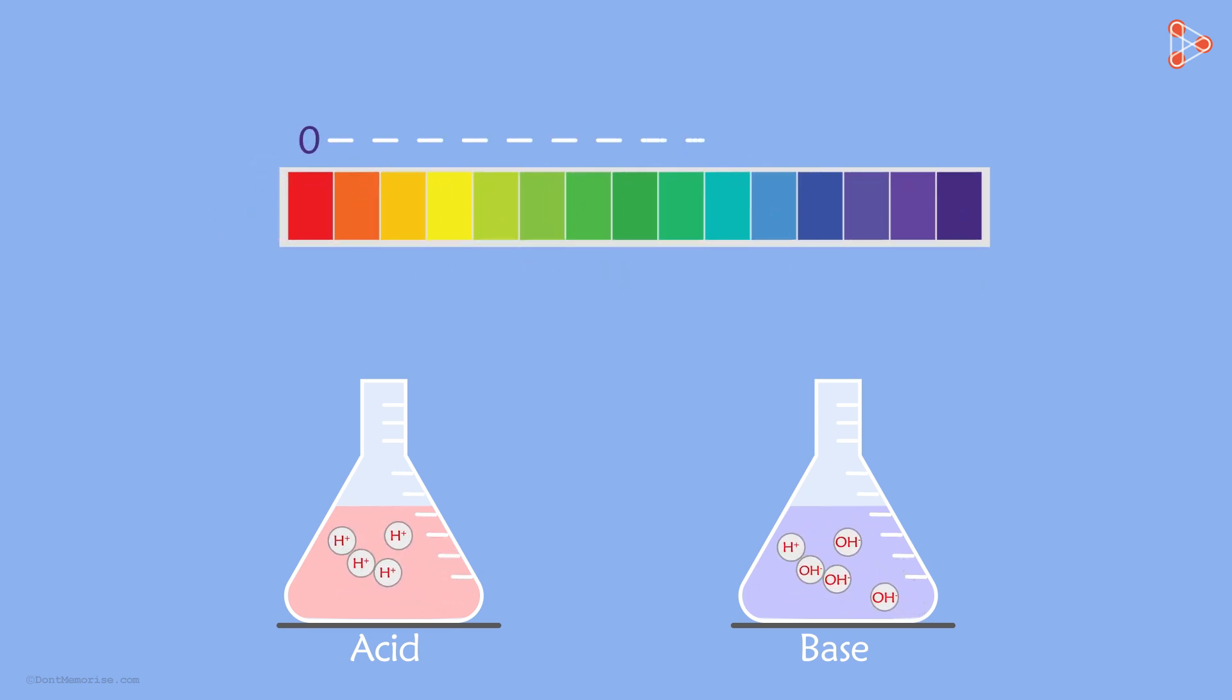And it ranges from 0 to 14. 0 being very acidic and 14 being very basic or alkaline. And the pH of a neutral solution right here in the middle is 7.